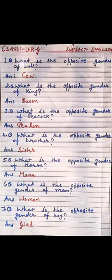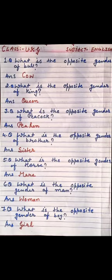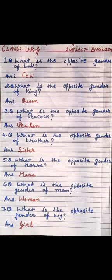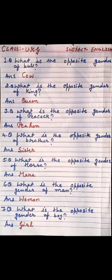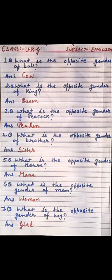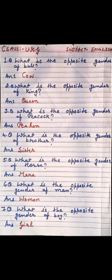Once again repeat. What is the opposite gender of bull? Answer: Cow. What is the opposite gender of king? Answer: Queen. What is the opposite gender of peacock? Answer: Peahen. What is the opposite gender of brother? Answer: Sister. What is the opposite gender of man? Answer: Woman. What is the opposite gender of boy? Answer: Girl.